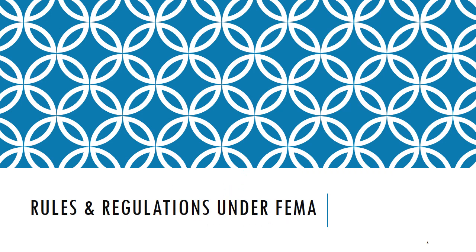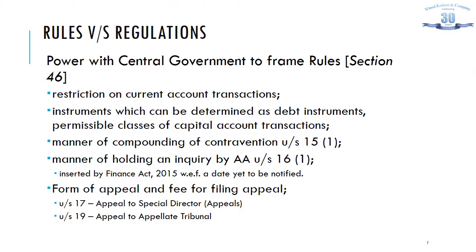Under FEMA, the central government has the power to frame rules pursuant to section 46, including rules relating to restriction on current account transactions, instruments which can be determined as debt instruments, or permissible classes of capital account transactions.